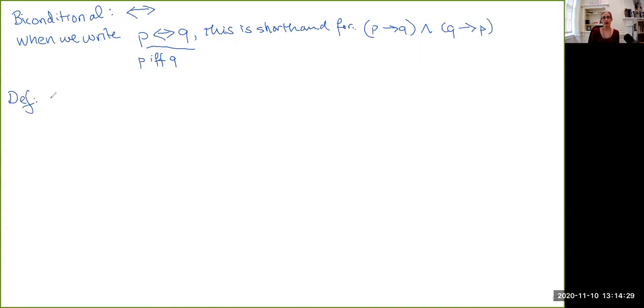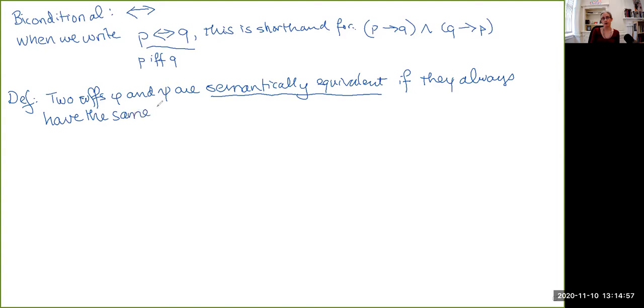So now we can give our definition of semantic equivalence. So two well-formed formulas, phi and psi, are semantically equivalent if they always have the same truth value as each other. It may not always be the case that they're always true or always false, but they will always match up with each other. So one thing to note from this is that every tautology is semantically equivalent to every other tautology, and every contradiction is semantically equivalent to every other contradiction. But they're kind of like the edge cases. We're interested in what's going on in the middle.